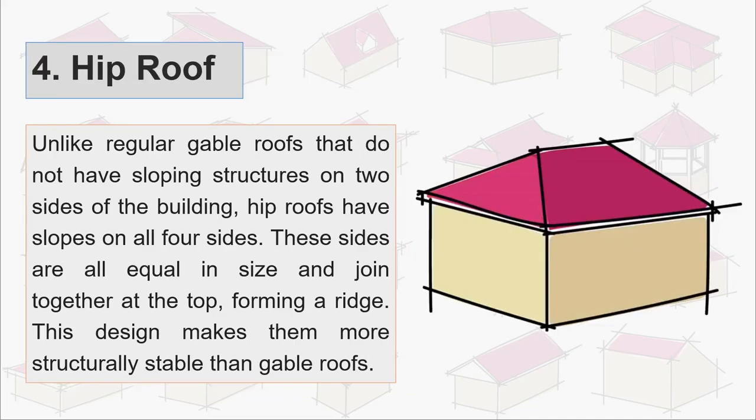Fourth is hip roof. Unlike regular gable roofs that do not have sloping structures on two sides of the building, hip roofs have slopes on all four sides and these sides are all equal in size and join together at the top forming a ridge. This design makes them more structurally stable than gable roofs.